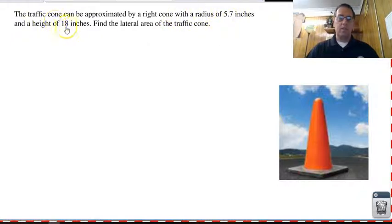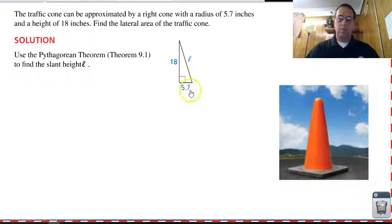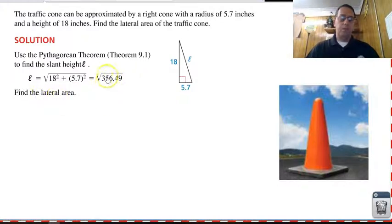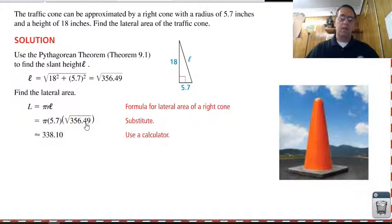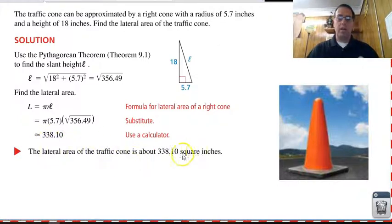We have a radius of five point seven inches and a height of eighteen inches, and they don't give us the slant height. So we're going to have to find that lateral height using the Pythagorean theorem. We have the square root of five point seven squared plus eighteen squared, approximately nineteen point zero seven. We plug that in: pi times our radius of five point seven times our slant height — square root of three fifty-six point four nine — and in our calculator we get approximately three thirty-eight point ten square inches.